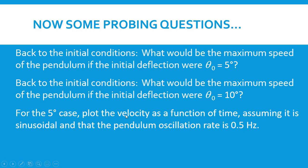So what I mean by velocity here—let's do both. Plot the angular velocity as a function of time, assuming that it's sinusoidal, and then plot the linear velocity of the pendulum bob as a function of time.